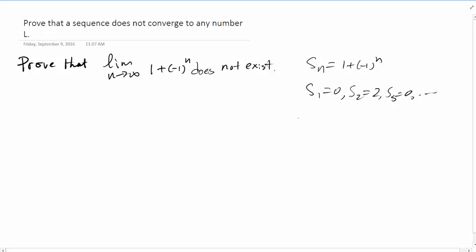So how can we do that? We still need to estimate |Sn - L|. What we have is 1 + (-1)^n - L. But we don't know L. We have to show this absolute value cannot be small for any L when n is large.